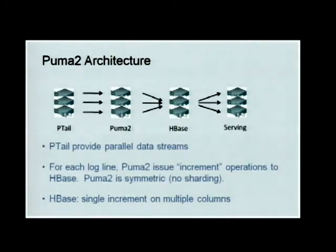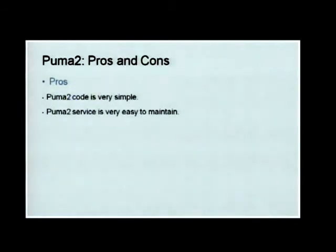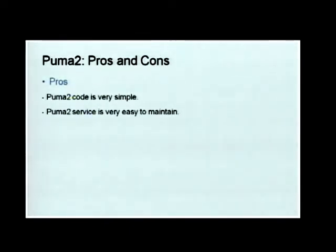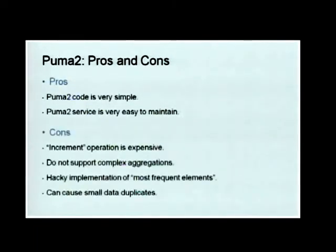The benefit of this architecture is that Puma2 code is very simple and easy to maintain. Because there's no sharding, we can bring up as many machines as we need and turn them down. If a machine fails, it just fails — that's a good part of the system.